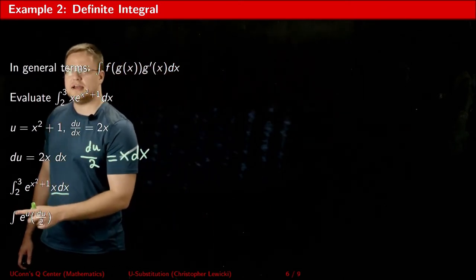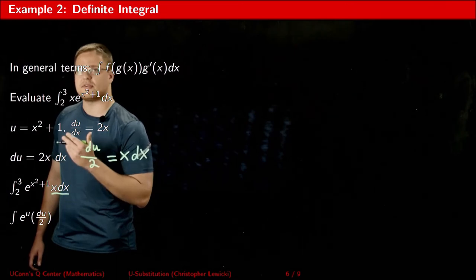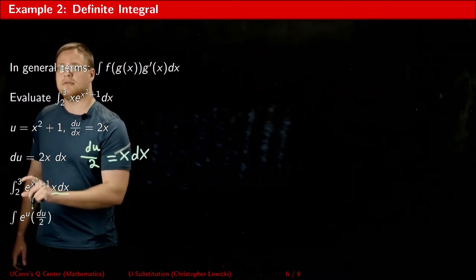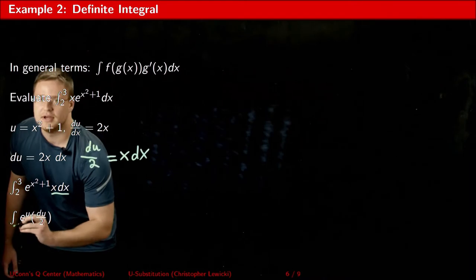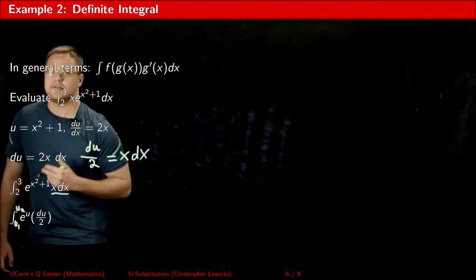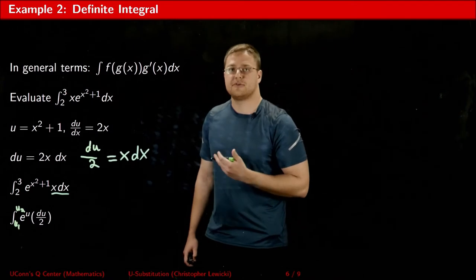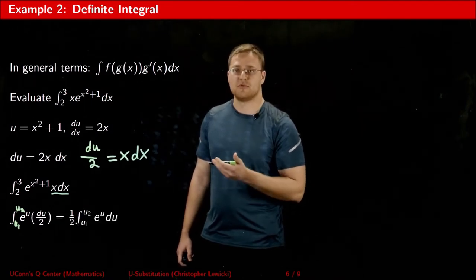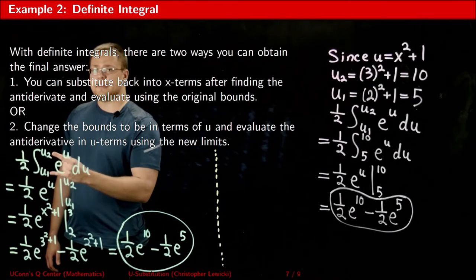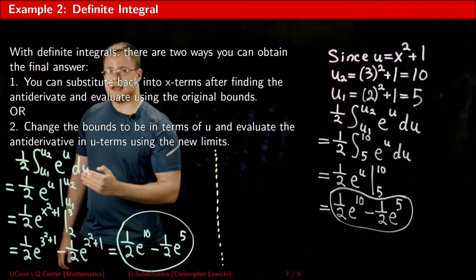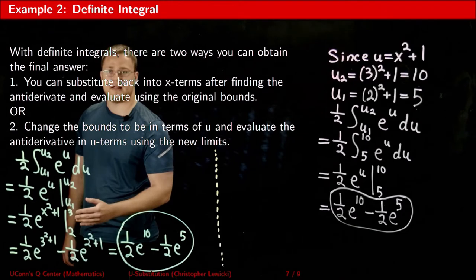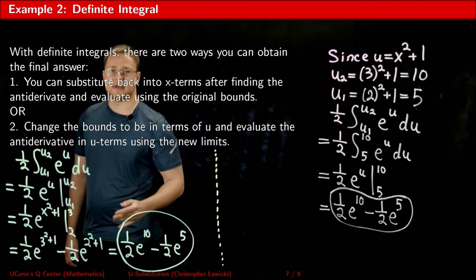Now I'll do my substitutions. Notice that I did not write out the bounds of the integral here — I did this on purpose to stress a very important point. Now that we've gone from being in terms of x to being in terms of u, the bounds are no longer the same. So I'm going to call the lower bound u1 and the upper bound u2 as temporary placeholders. I can factor out the 1/2 constant. One option is to keep the temporary placeholders, do the integration, then revert back to x including restoring the original bounds, and evaluate.